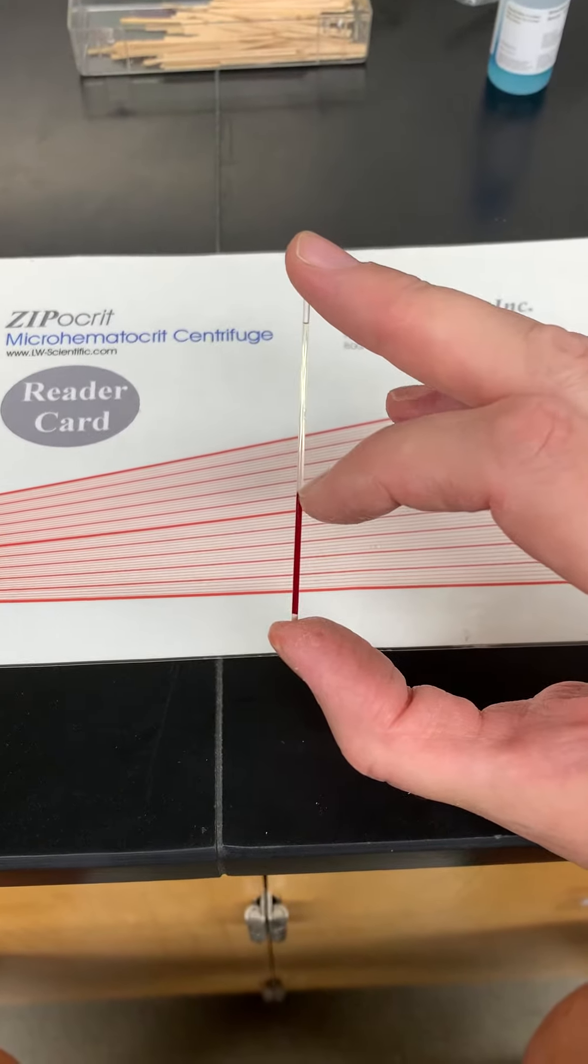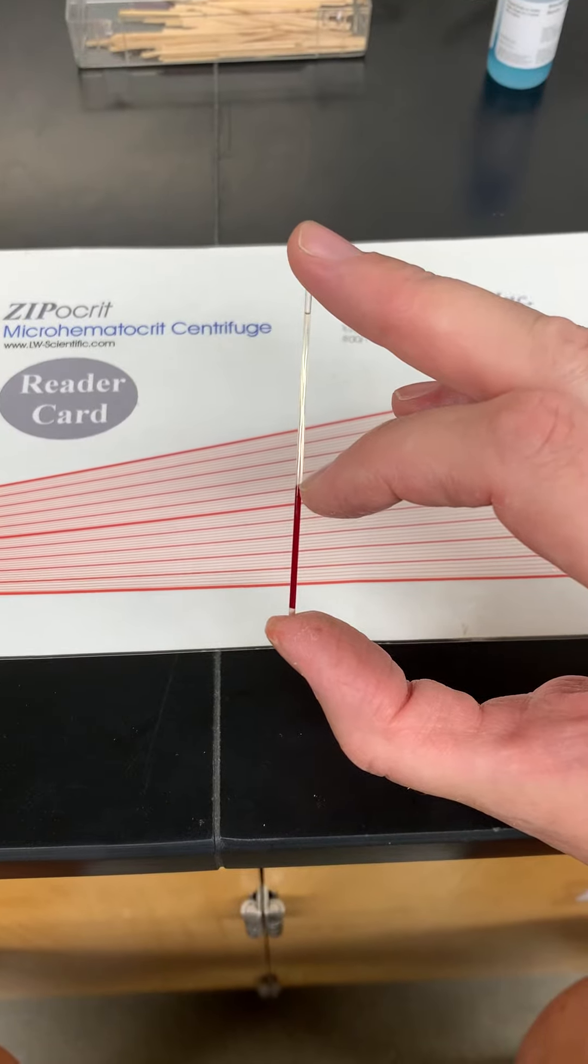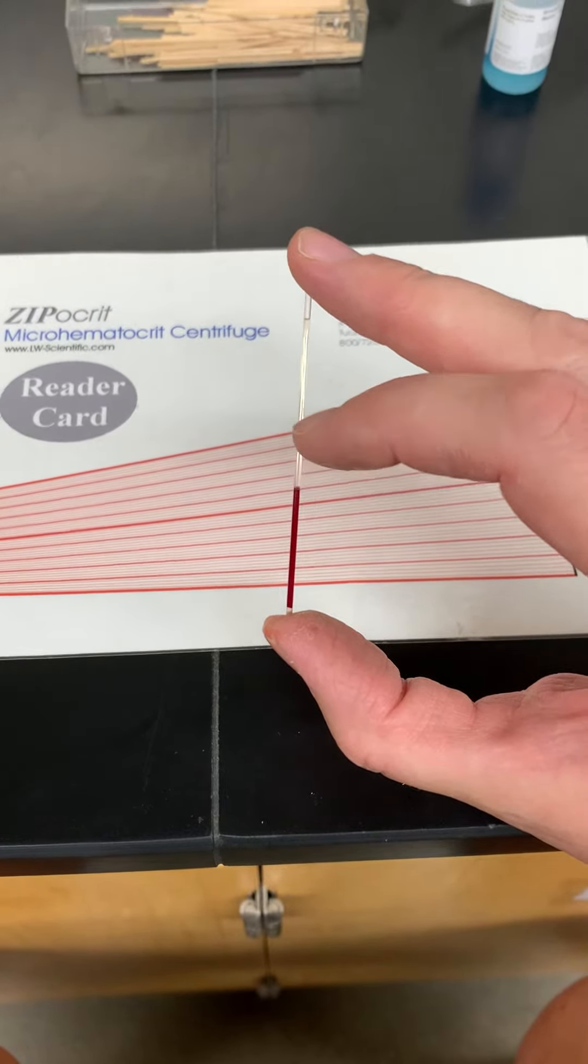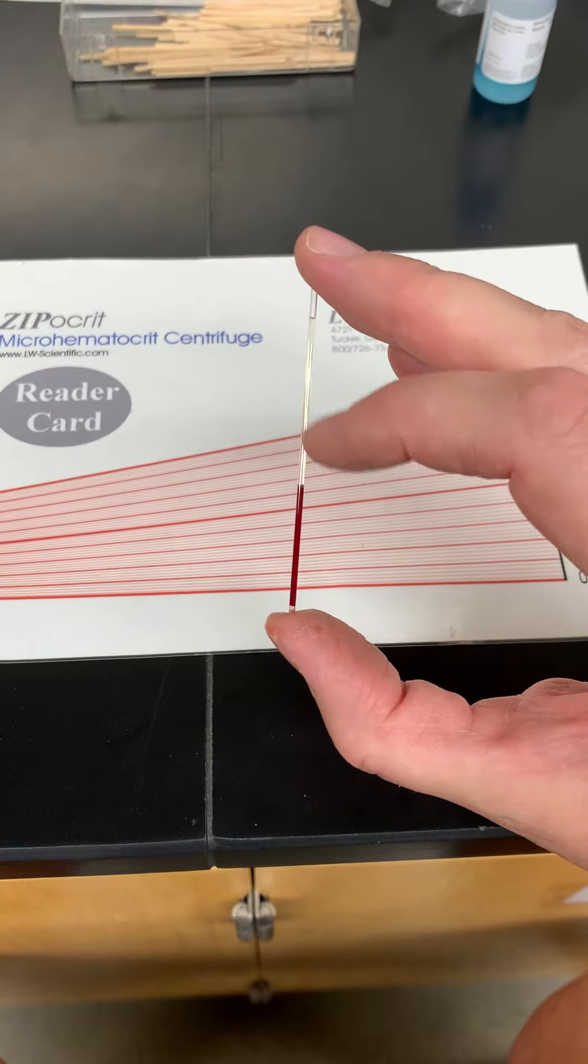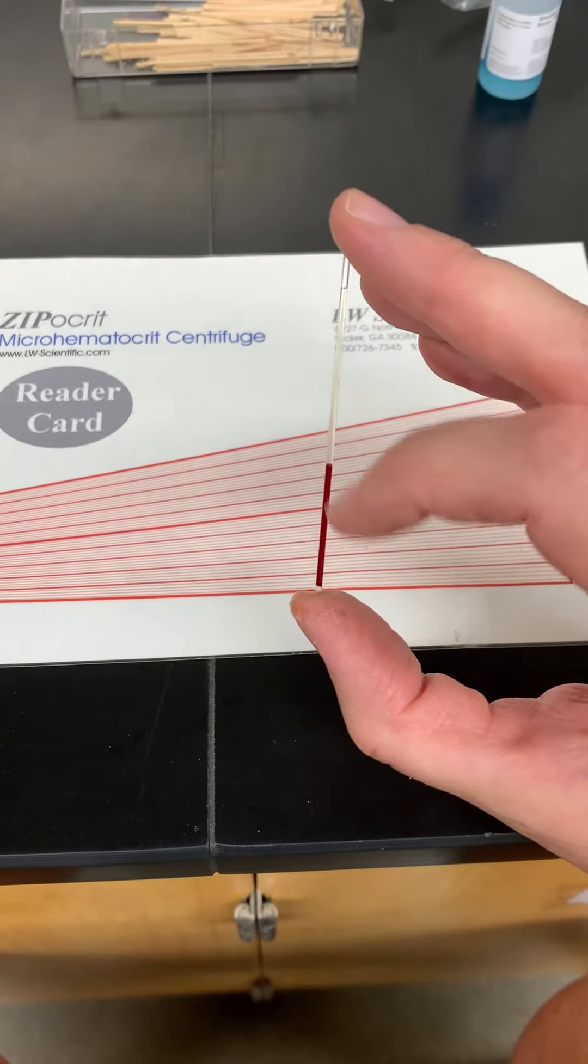The buffy coat, which is the white blood cells and the platelets, are right about here where my index finger is, and then the top of the plasma is right about here. So this is plasma, buffy coat, and then red blood cells.